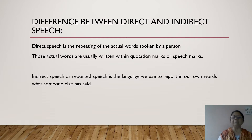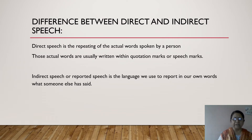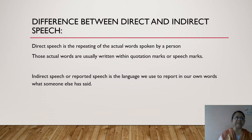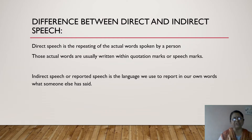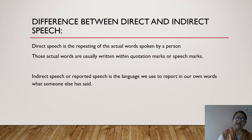Indirect speech, or reported speech, is the language we use to report in our own words what someone has said. When someone says something to us and we go and report it to another person, we may change certain words and remove the inverted commas, because these are not the exact words of the speaker. We also remove the comma and other punctuation marks, except for the full stop, and then report it to the other person. So indirect speech is also known as reported speech.